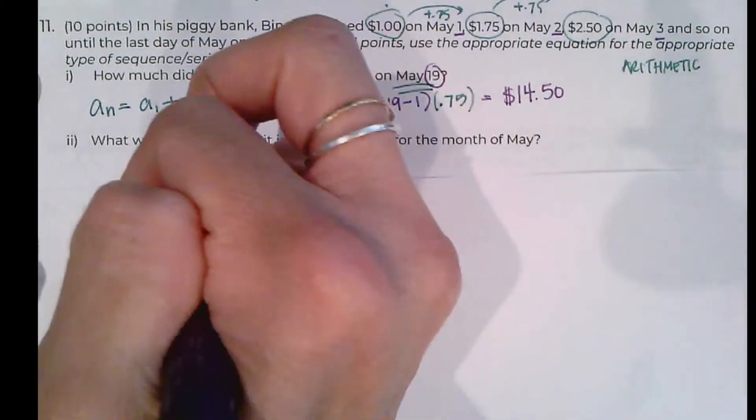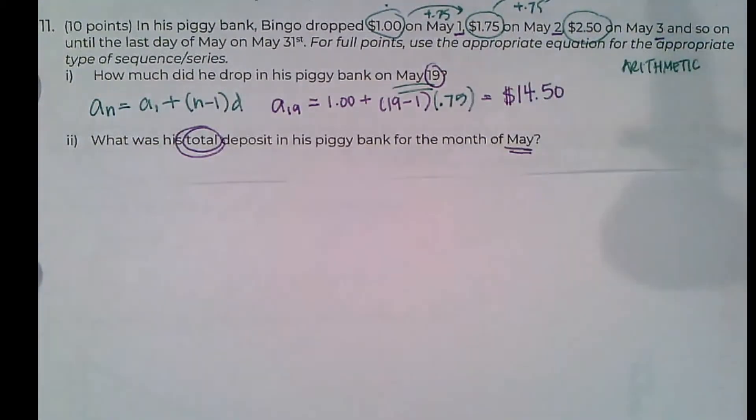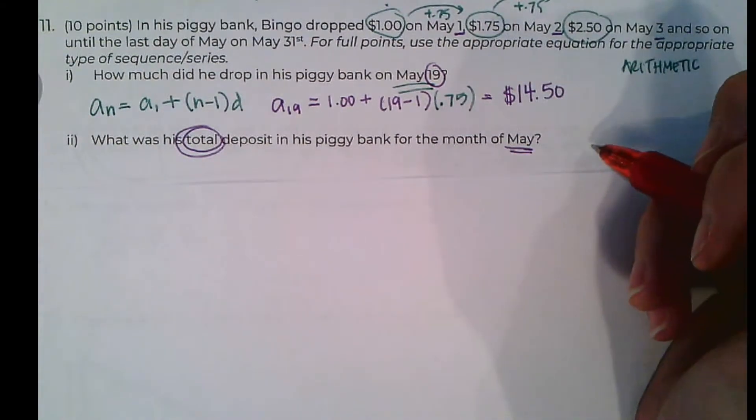And then it says, what was his total deposit for the month of May? So here's where I have to be clever. May doesn't just have 19 days. How many days does May have in it?